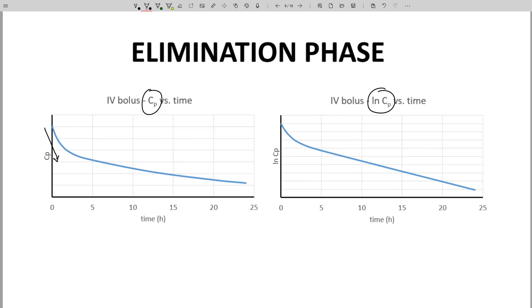This initial drop is called the distribution phase. The initial drop highlights the idea that the molecule initially deposited into the blood, the plasma, very quickly circulates through the body and distributes into various tissues.